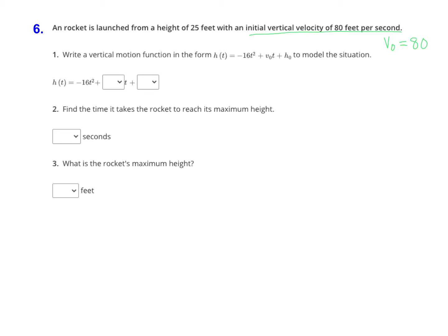The h sub zero is the initial height. That's the height where the projectile is launched from. Here it's a rocket that's launched from a height of 25 feet. That's the initial height, that's h sub zero. Now to write the equation we just have to replace the v sub zero with 80 and the h sub zero with 25.